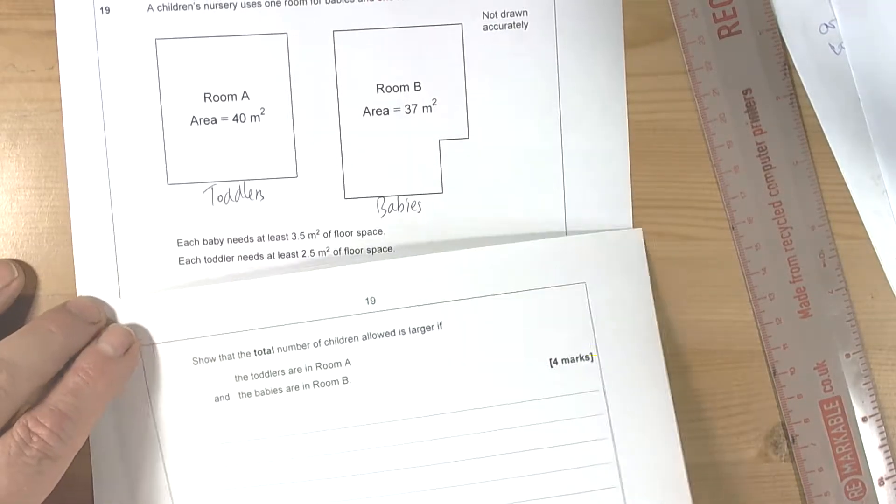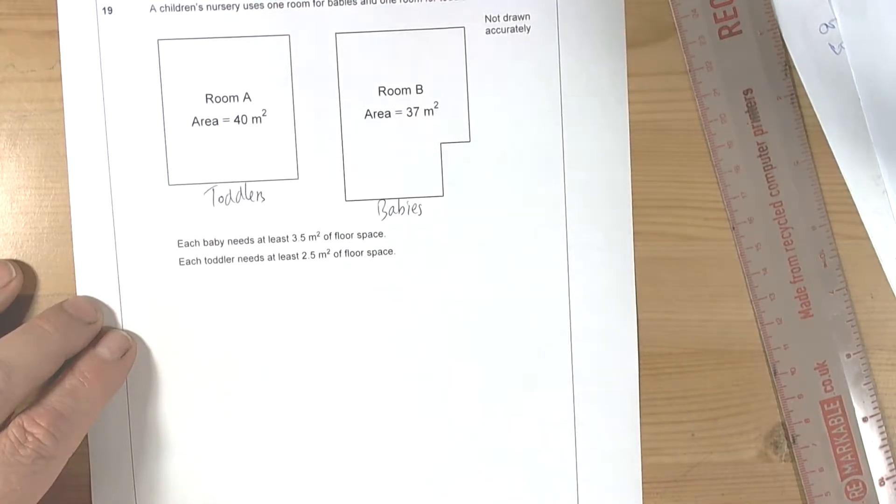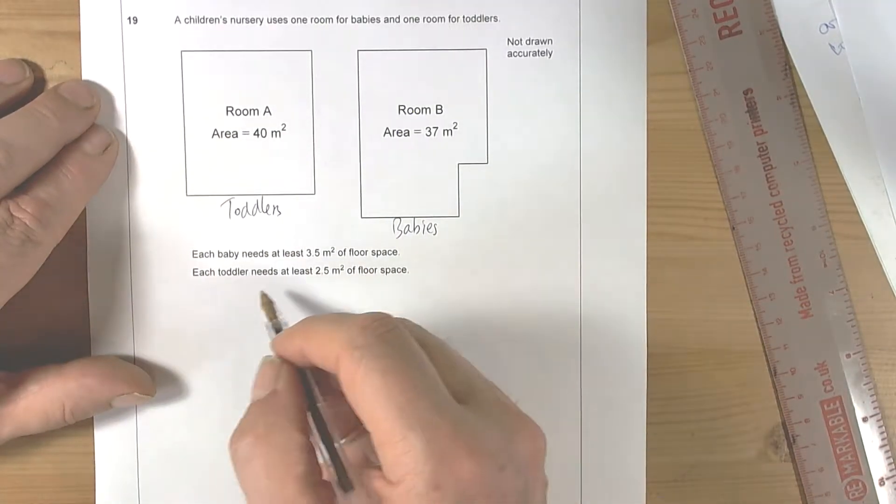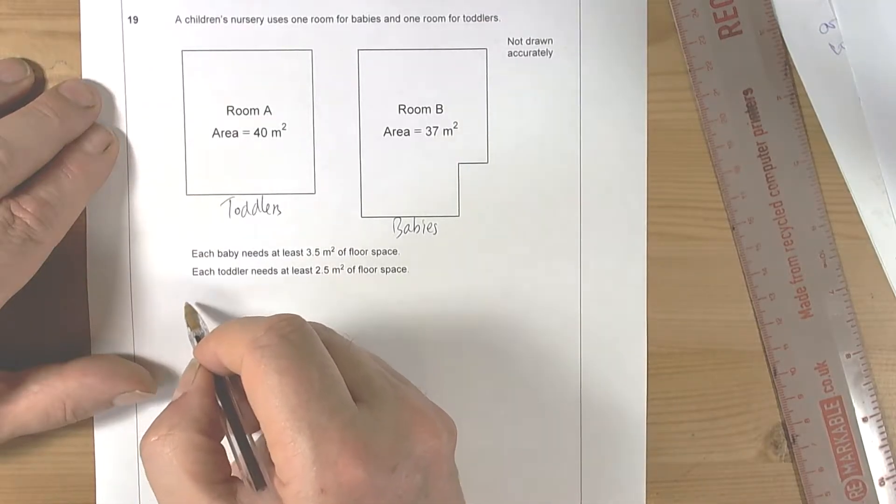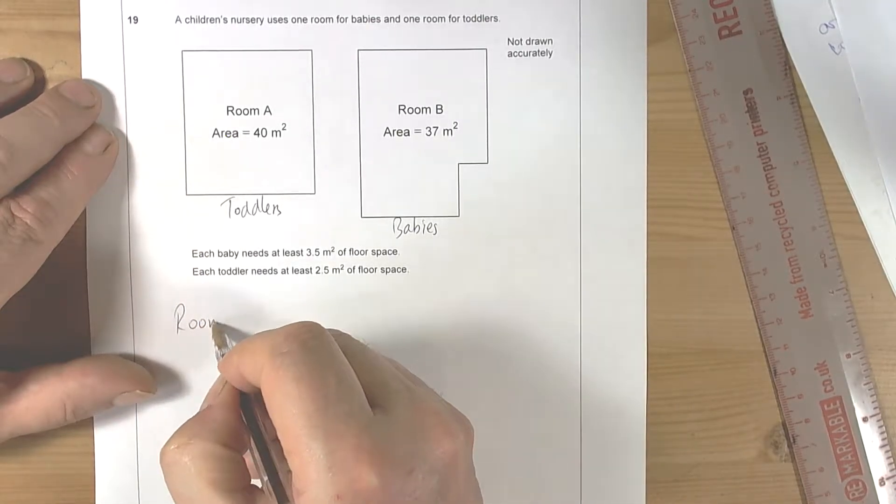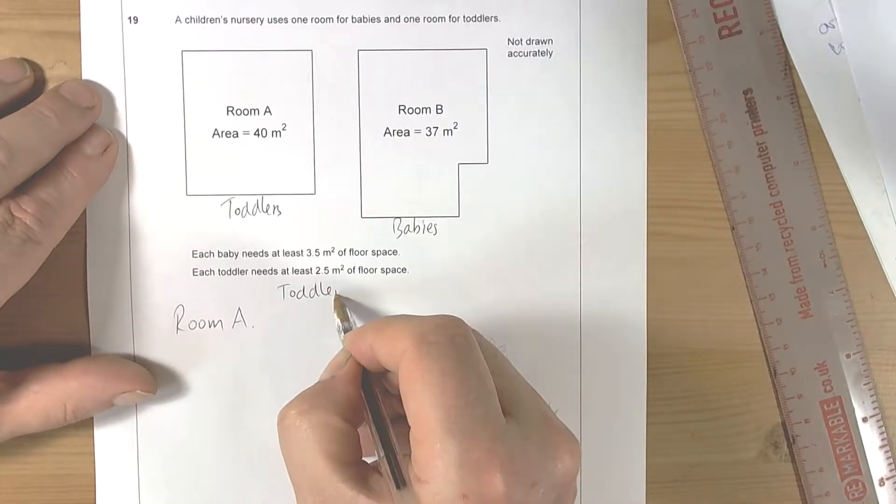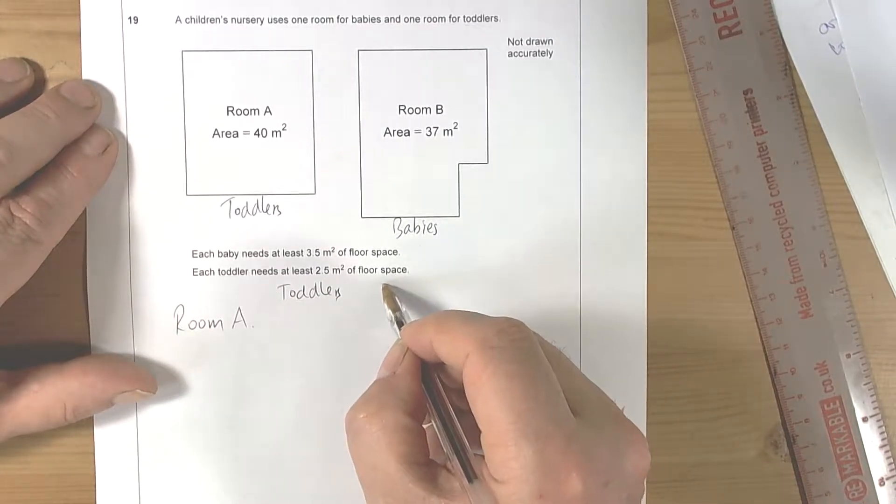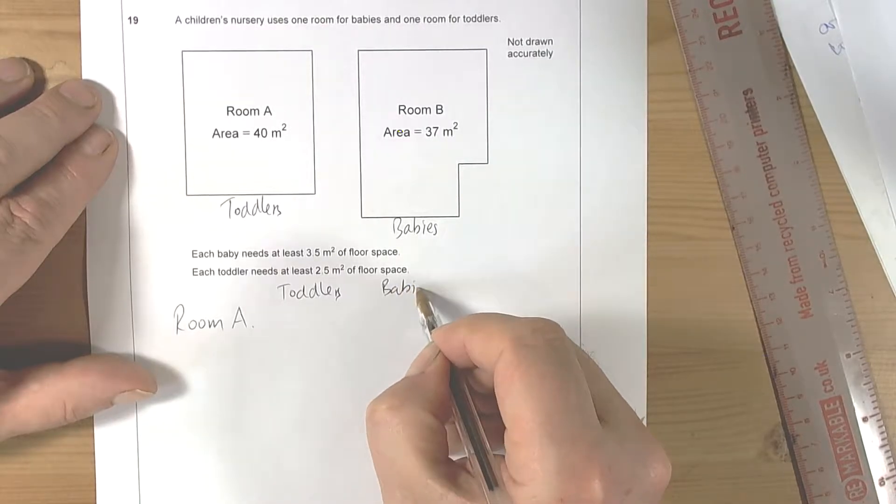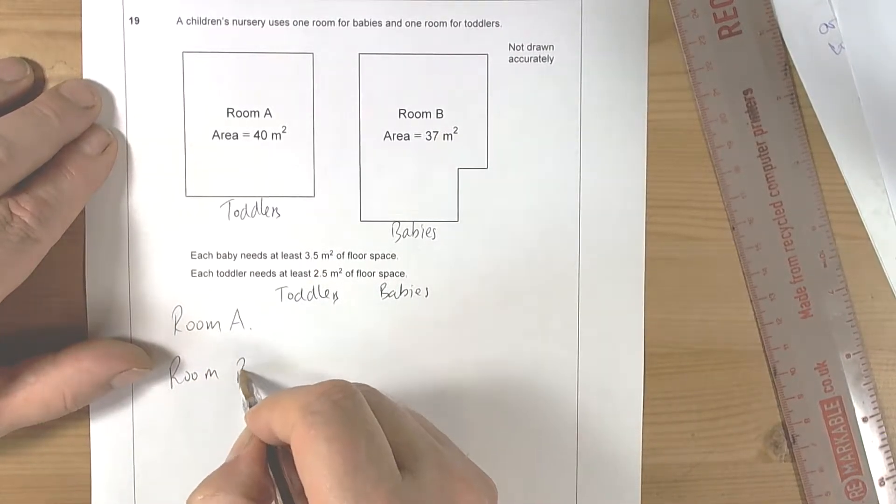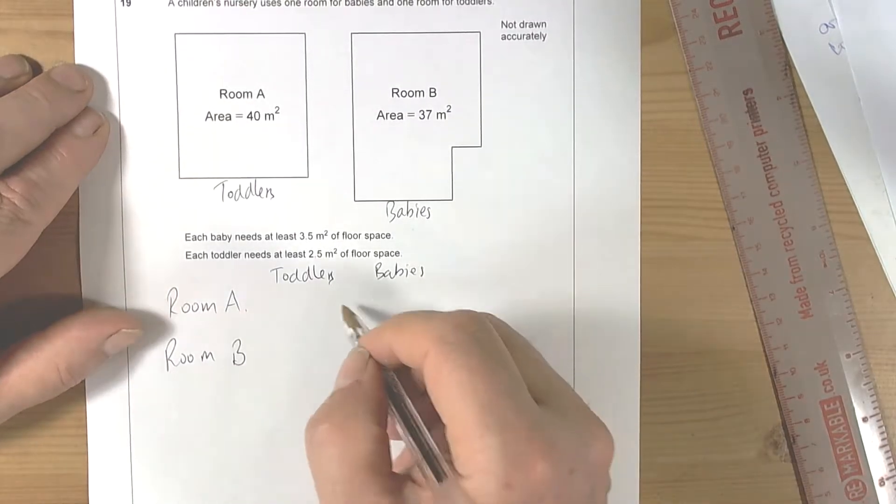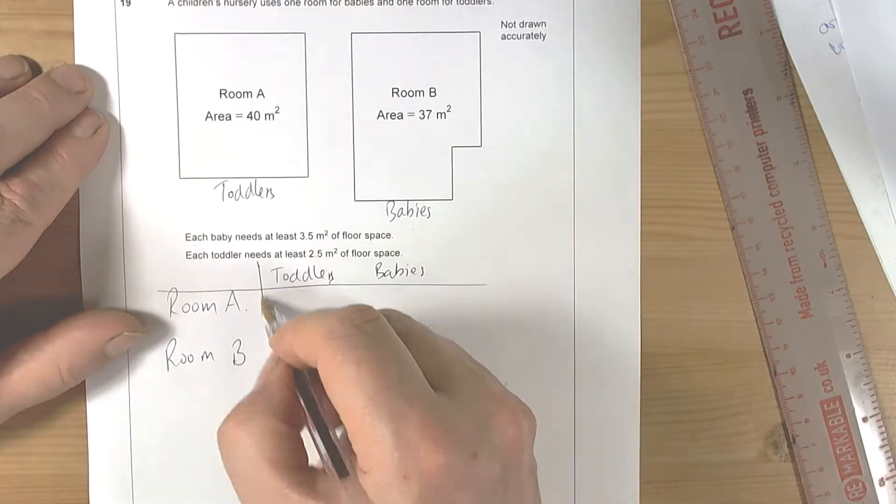Toddlers, babies, room B - okay, so a two-way table will be useful.